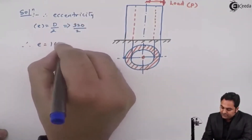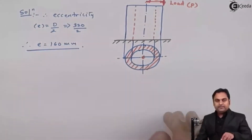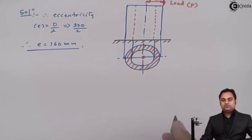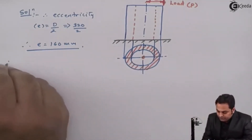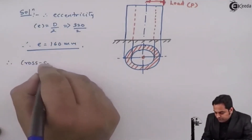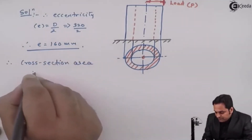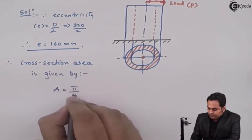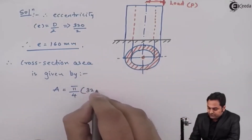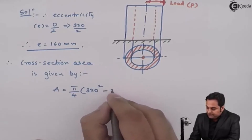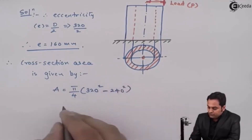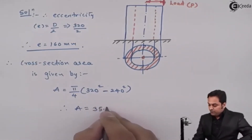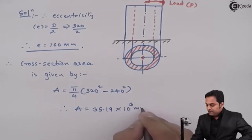After getting the eccentricity, the next step is to calculate the cross-sectional area. Therefore area A = π/4 × (320² − 240²), which gives A = 35.19×10³ mm².